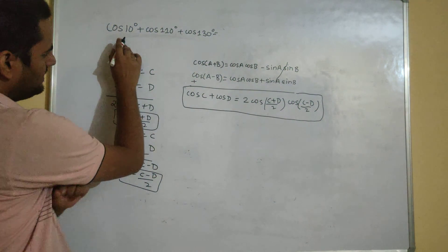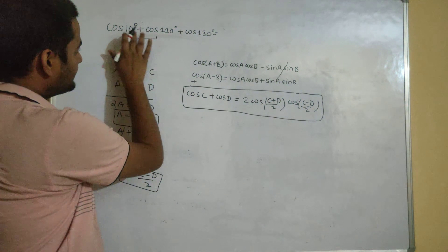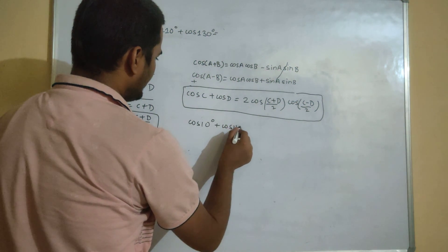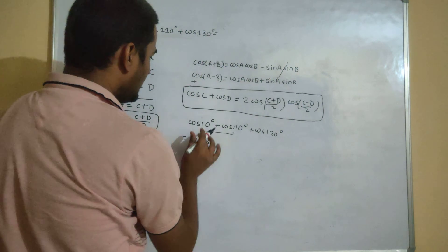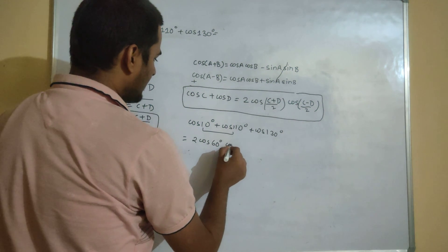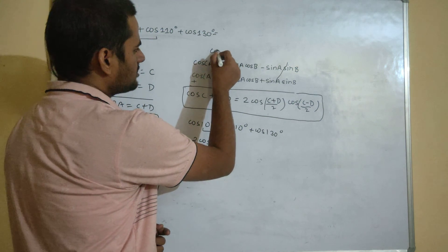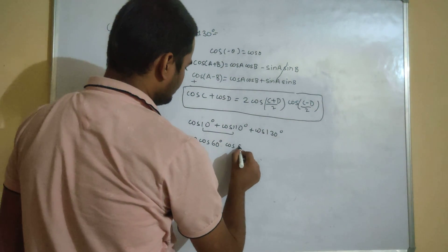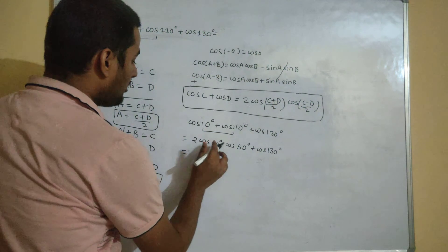Let's use this in the first two terms: cos 10 plus cos 110 plus cos 130. Applying the formula to cos 10 and cos 110, I get 2 times cos of (10+110)/2, which is cos 60, multiplied by cos of (10−110)/2, which is cos(−50). Since cos(−θ) equals cos θ, this is cos 50. Cos 60 is one-half, so 2 times one-half gives 1, leaving cos 50 plus cos 130.